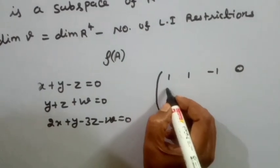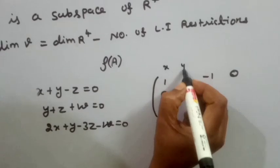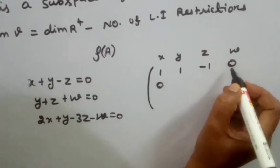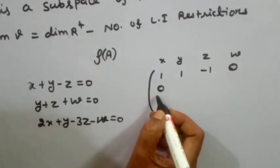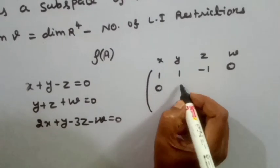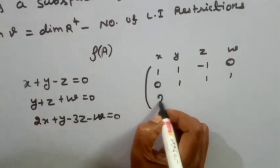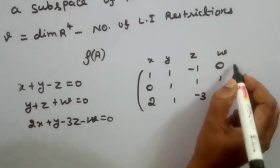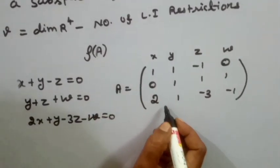The second equation y + z + w = 0 gives row (0, 1, 1, 1). The third equation 2x + y - 3z - w = 0 gives row (2, 1, -3, -1). This is our coefficient matrix A, and we need to find its rank.